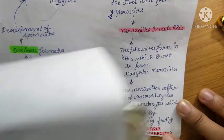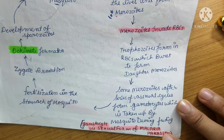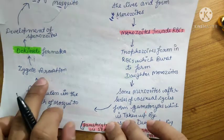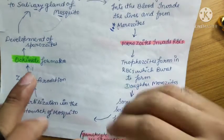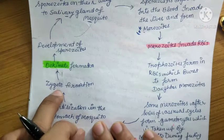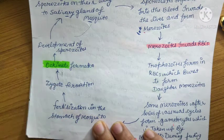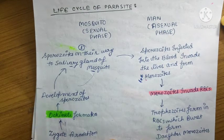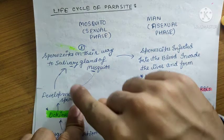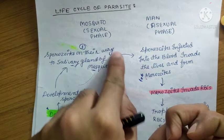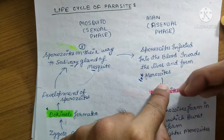Fertilization occurs in the stomach of the mosquito and the zygote is formed. The zygote then develops into an ookinete. From the ookinete, the oocyst develops, and then sporozoites are formed from the oocyst and stored in the salivary gland of the mosquito.